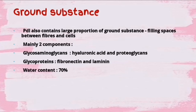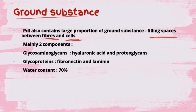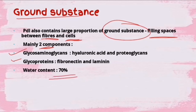Now coming to the ground substance - the third and last component of periodontal ligament. The periodontal ligament contains a large proportion of ground substance that fills the spaces between the fibers and cells. Ground substance is basically composed of two components: glycosaminoglycans and glycoproteins. They also have a significant water content - around 70 percent of it is water content.